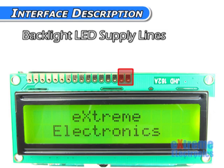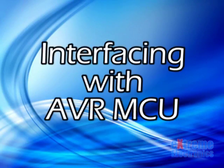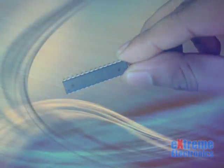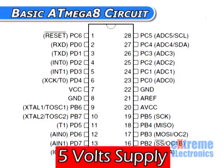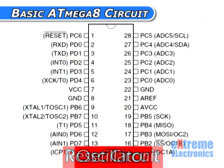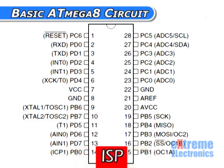We feed 5 volt inputs to the backlight lines via a 100 ohm half watt resistor. Now let's move on to how we can use one of these modules with an AVR MCU like an AT-Mega8. We'll start with the hardware setup. You need an AT-Mega8 IC with a basic circuit including a 5 volt supply, a reset circuit, a crystal oscillator, and an ISP header.